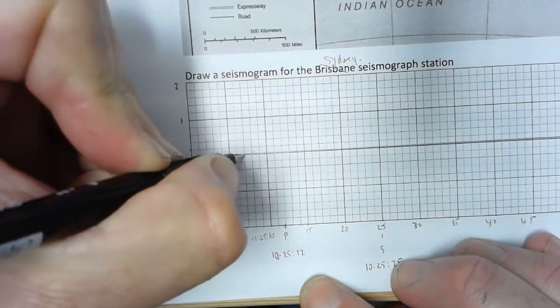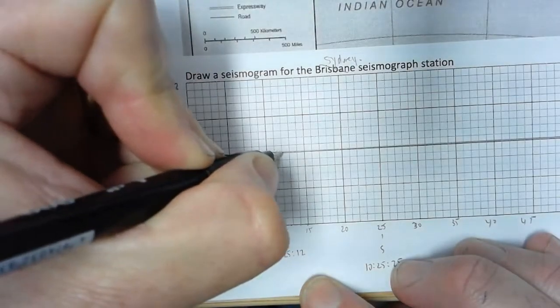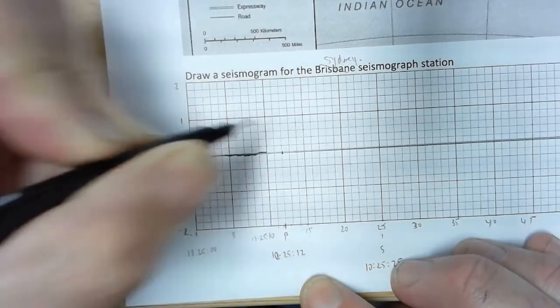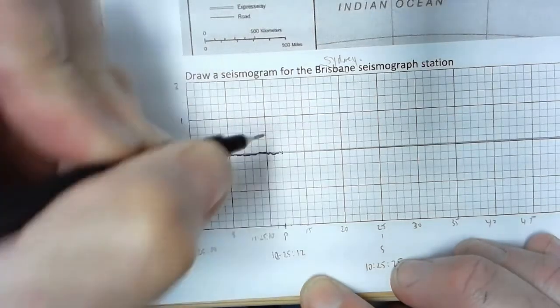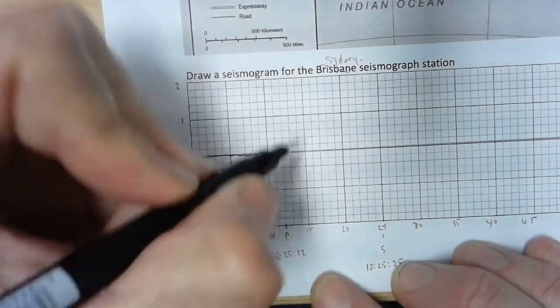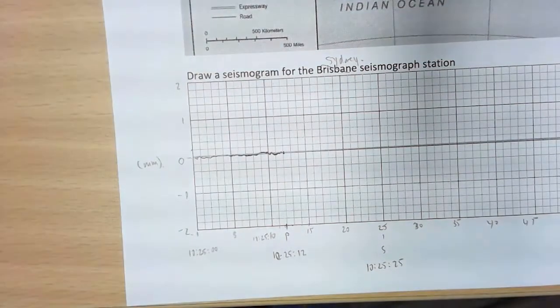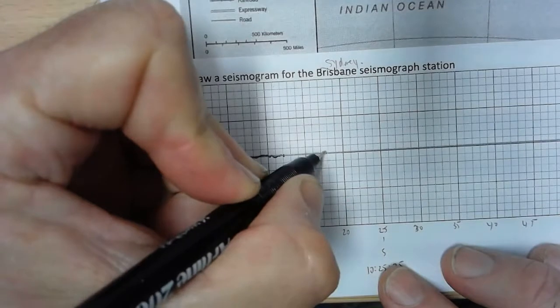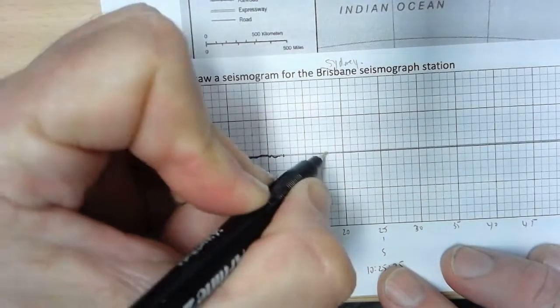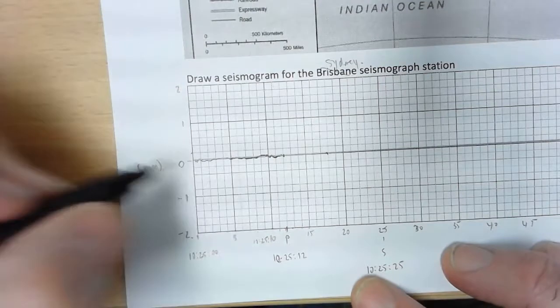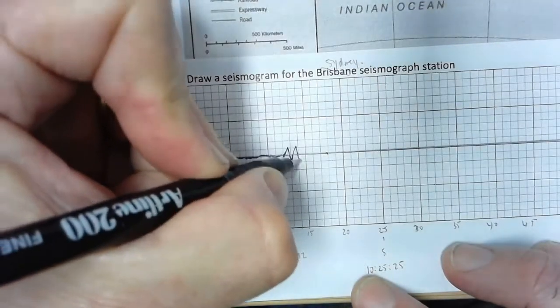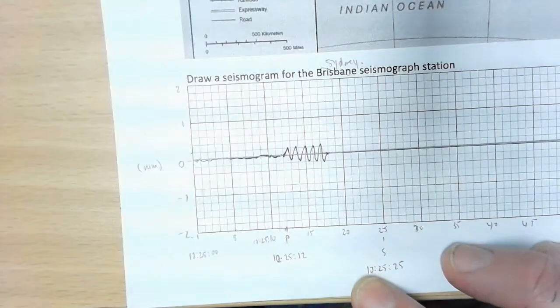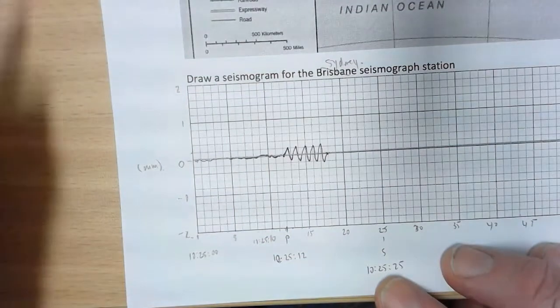Nothing is really happening at all until 10:25:12, which is here. This is when we're going to have our P wave arrive. Now, we don't have enough information to say when the P wave stops shaking the ground, so I'm just going to say it's around about there. This is a little bit arbitrary. So we've got our P wave. We know our P wave is smaller than our S wave, so I'll just draw something like that.